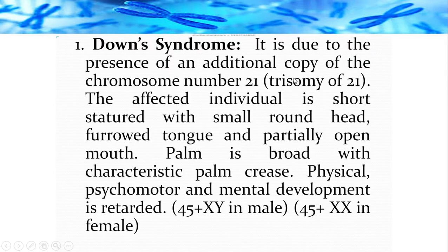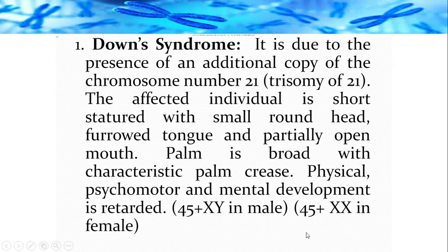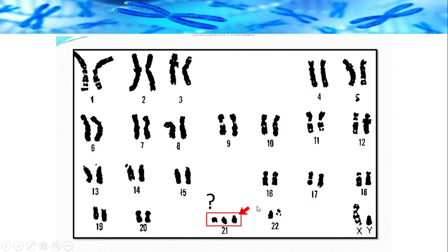Down syndrome is due to the presence of an additional copy of chromosome 21 — that is trisomy of the 21st chromosome. The individual has three copies of chromosome 21 instead of two. Symptoms include short stature, a small round head, broad tongue, partially open mouth, broad palm with a characteristic palm crease, and retarded physical, psychomotor, and mental development. The child can be male or female since the 21st chromosome is not a sex chromosome. The karyotype is 45+XY in males or 45+XX in females.